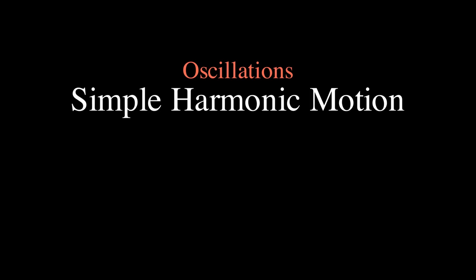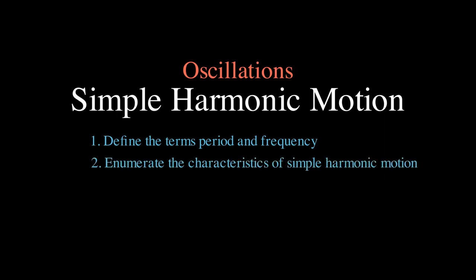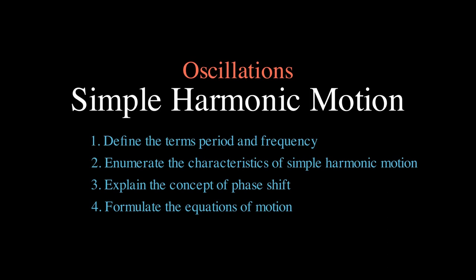Welcome back. In our previous segments, we delved into the intricacies of linear motion and rotational dynamics, unraveling the nuances of objects moving along straight and curved trajectories. In this video, we will delve into the characteristics of an object displaying perpetual motion. By the end of this video, you will be acquainted with the terms period and frequency. Additionally, we will explain the characteristics of simple harmonic motion, delve into the concept of phase shift, and finalize by formulating the equation of oscillatory motion.